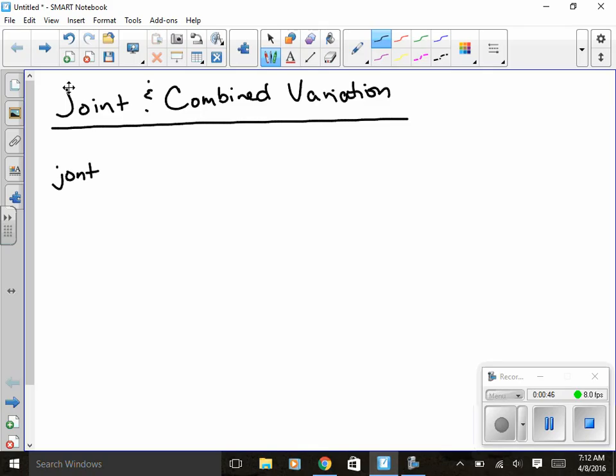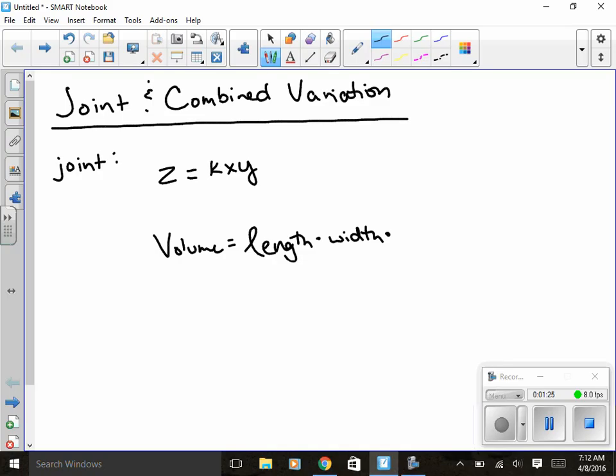A joint variation, joint variation is in the form of Z equals KXY. K obviously can't be zero because that would just cancel everything out. A classic example for this is the volume formula. The volume of just a regular box is length times width times height. So as you can see, volume is my Z, length is my K, X is my width, Y is my height.